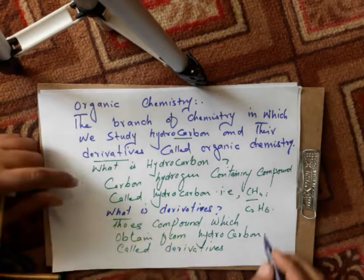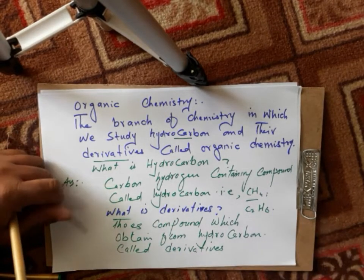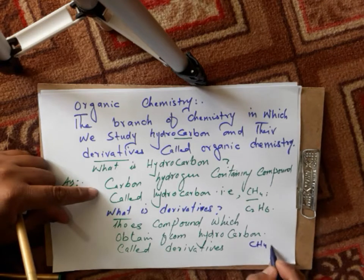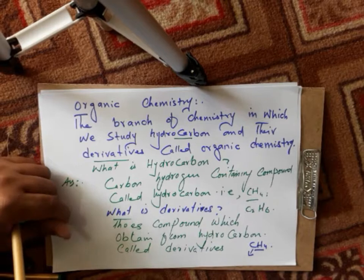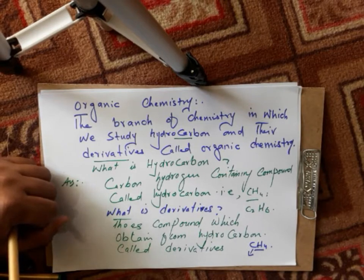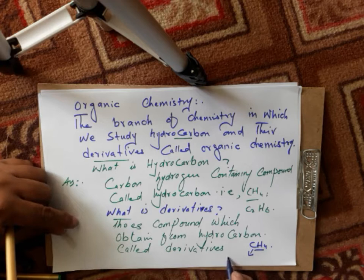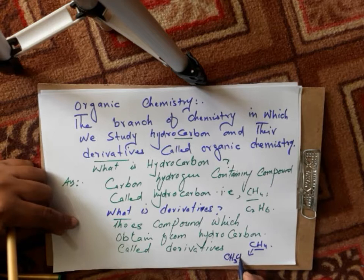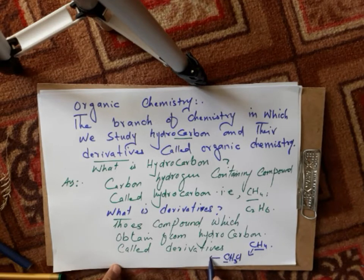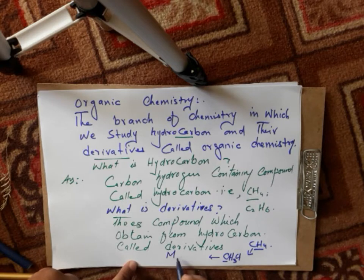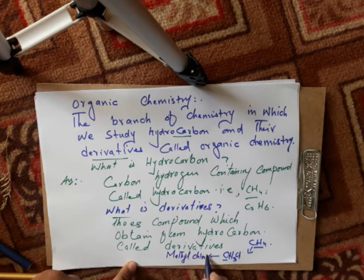For example, if you have the compound CH4 (methane), and you replace a hydrogen with chlorine, the resulting compound is CH3Cl. This compound CH3Cl is an example of a derivative of a hydrocarbon.